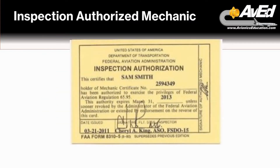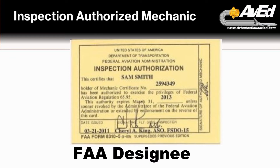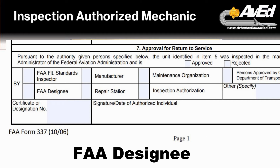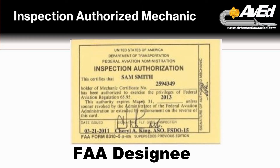An inspection authorization is FAA inspector delegated authority, which means you're essentially like a DME — a designated mechanic examiner — or a designated airworthiness representative, in that you as an IA are actually performing functions delegated to an FAA inspector. In fact, on FAA Form 337, Block 7, there's a place for an FAA inspector to sign. This allows that person to work on behalf of the FAA to ensure the airworthiness of the aircraft.